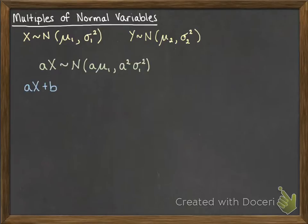If you're looking at aX plus b, you've got your distribution X multiplied by a constant a and then added a constant b. This will also follow a normal distribution. The mean will be multiplied by a and added b. But the adding b doesn't affect the variance. Adding a constant doesn't change how much your data spreads. So that will stay as a squared sigma 1 squared.